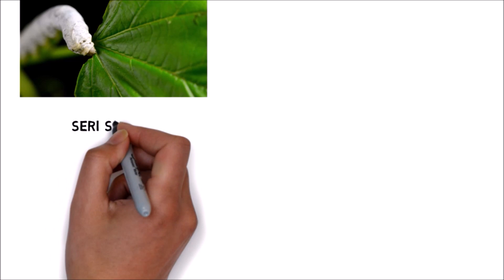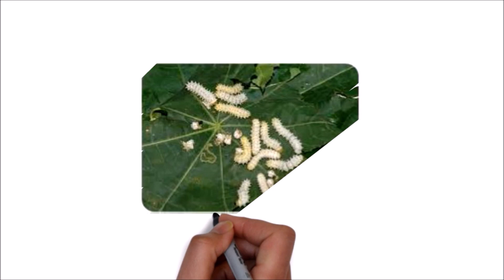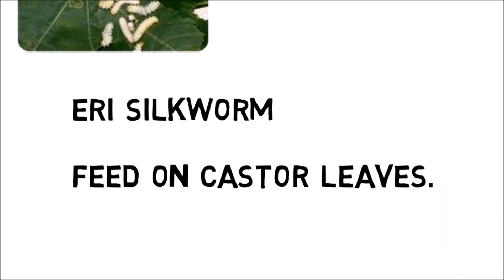Seri silkworm, which is also known as mulberry silkworm, feeds on mulberry leaves. Airy silkworm whose scientific name is Bombyx mori feeds on castor leaves.